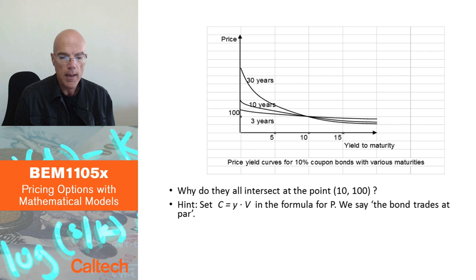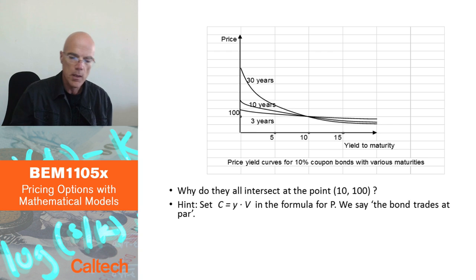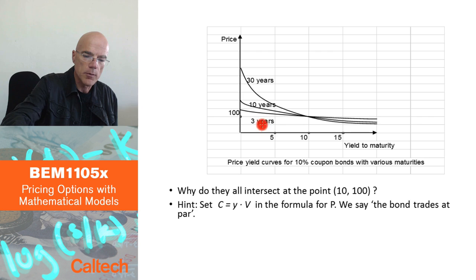These are again price-yield curves, but now I am changing the maturity. The previous graph was for the same maturity for all the bonds, just different coupon percentages. Here I'm taking the same percentage, like 10% coupons for all bonds, but they have different maturities: a 30-year bond, 10-year bond, 3-year bond.